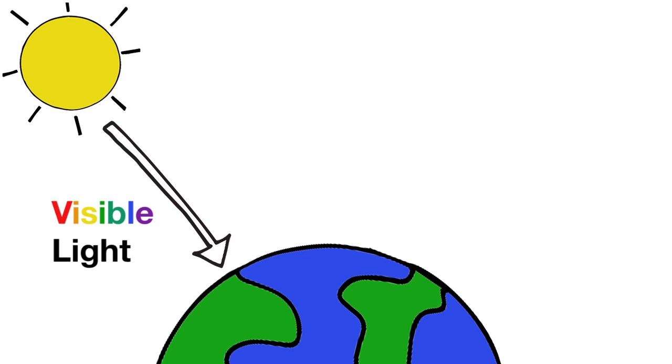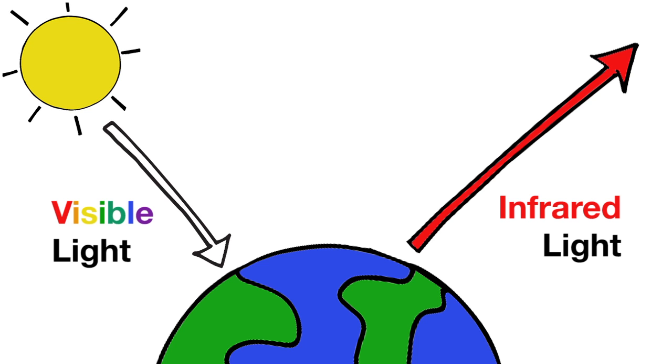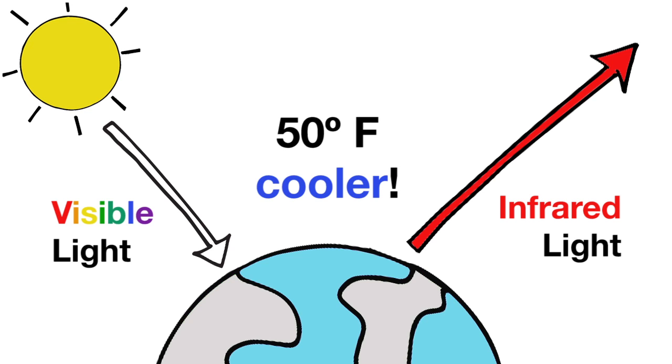Without this greenhouse effect caused by these greenhouse gases in the atmosphere, the earth's average surface temperature would be about 50 degrees Fahrenheit cooler, which is well below the freezing point for ice.